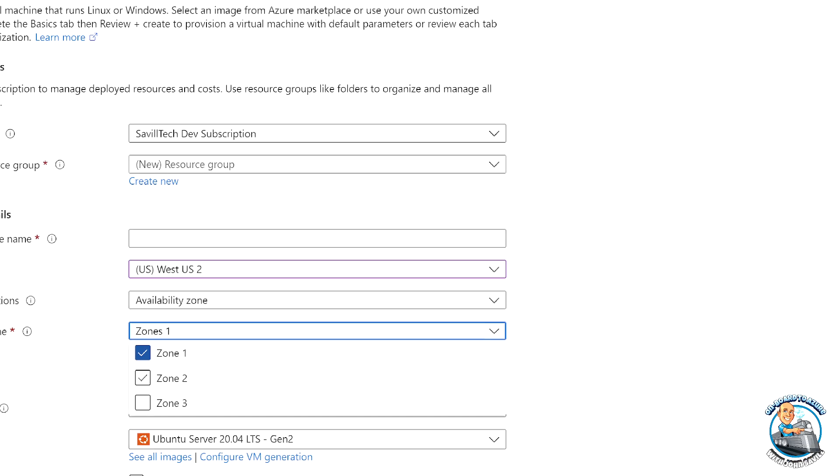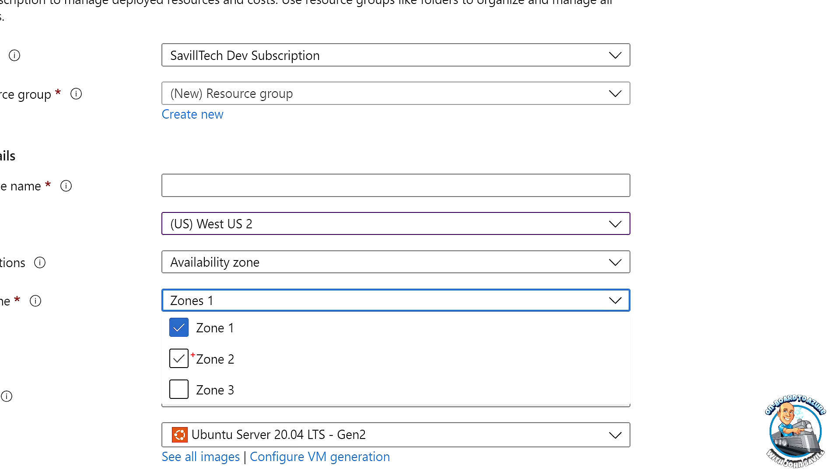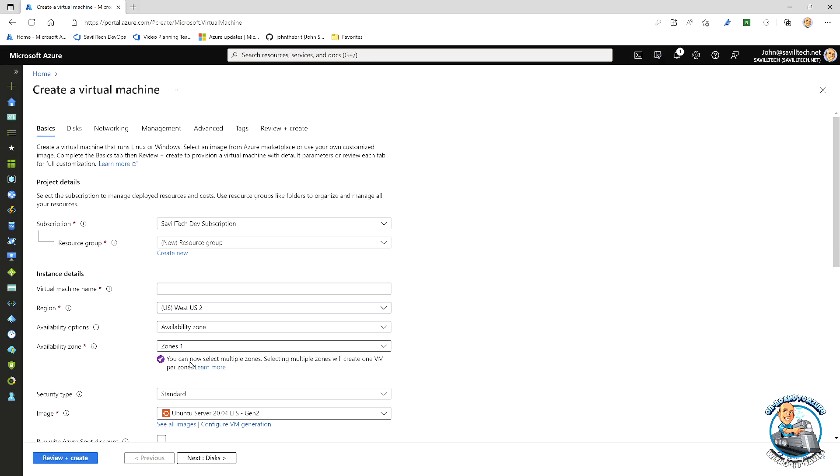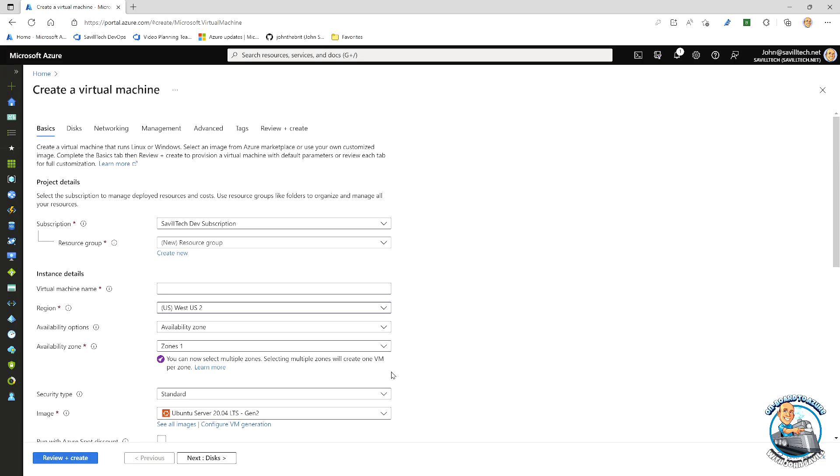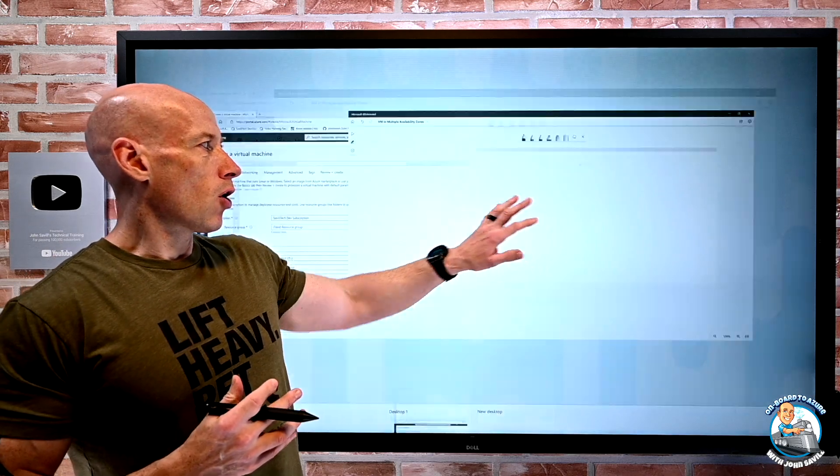But if I pick availability zone, well, I can now do a checkbox. I could select multiple availability zones, and the description is even telling me that. Hey, you can now select multiple zones, and it will create one VM per zone. And that's really the key point in what this new portal option is doing.